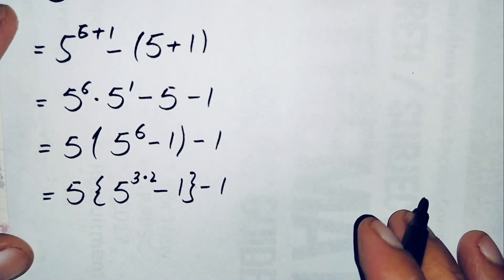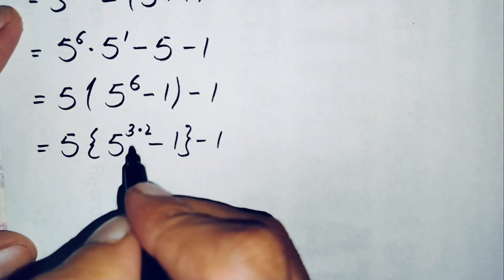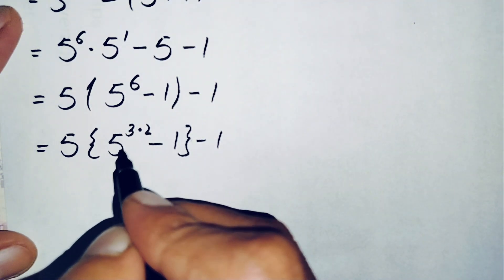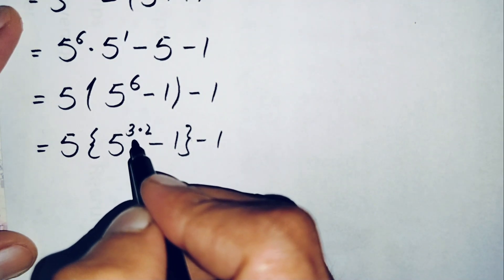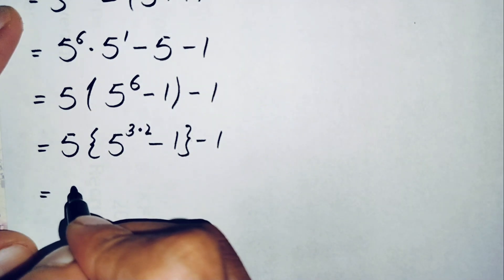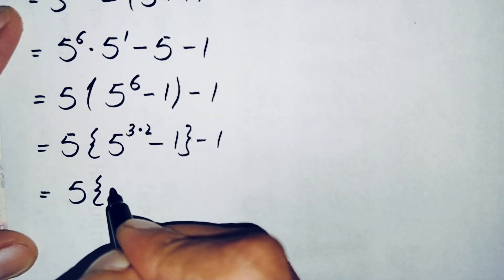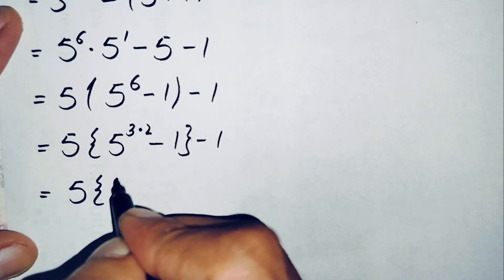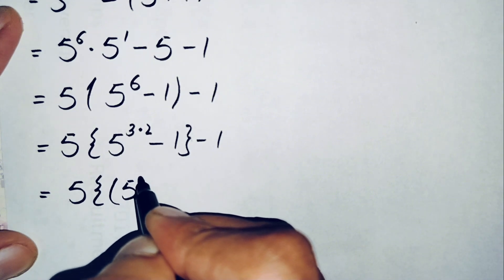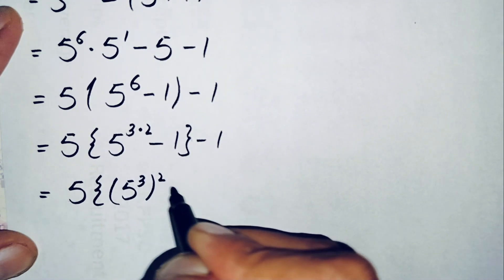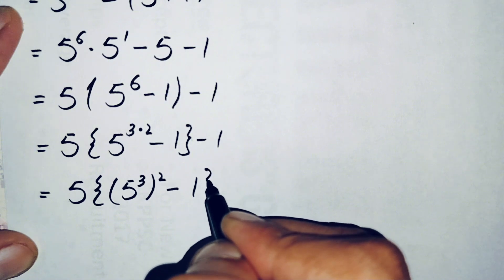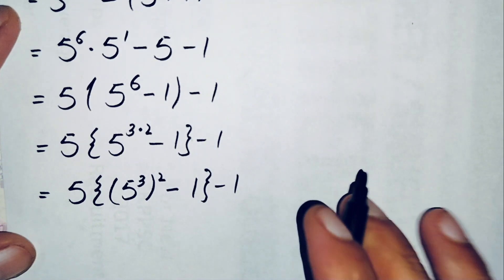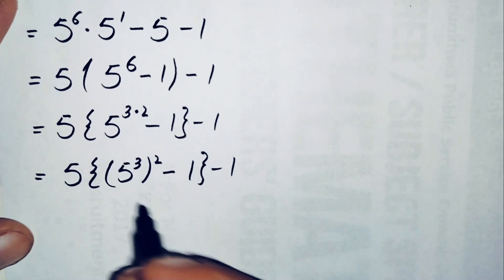Here we apply the exponential math property to bring out the power 2. This can be written as 5 times (5 raised to power 3) raised to power 2, minus 1.